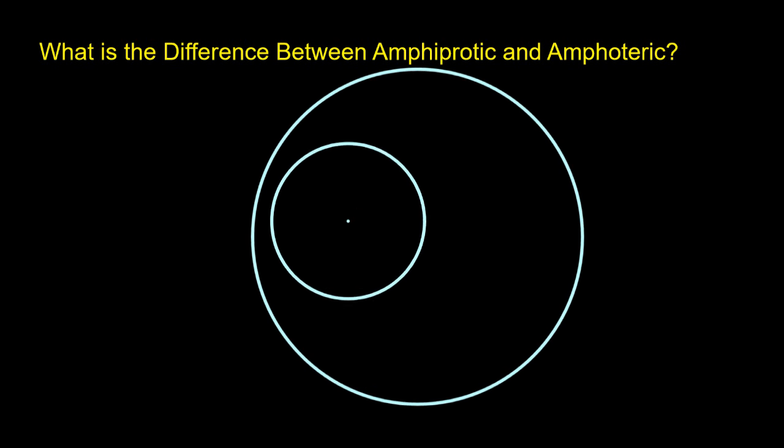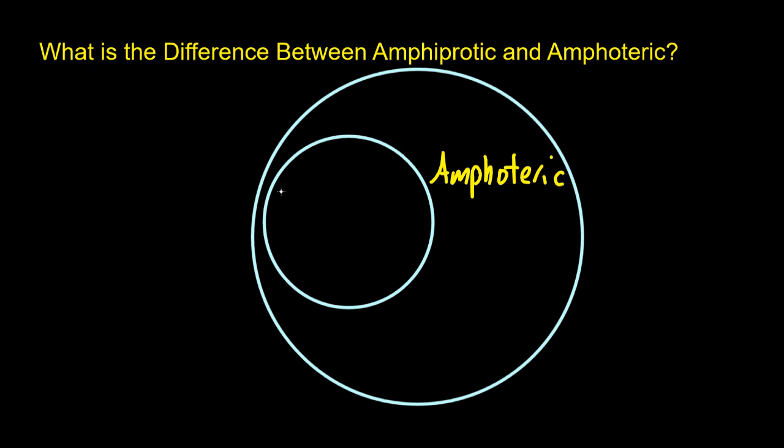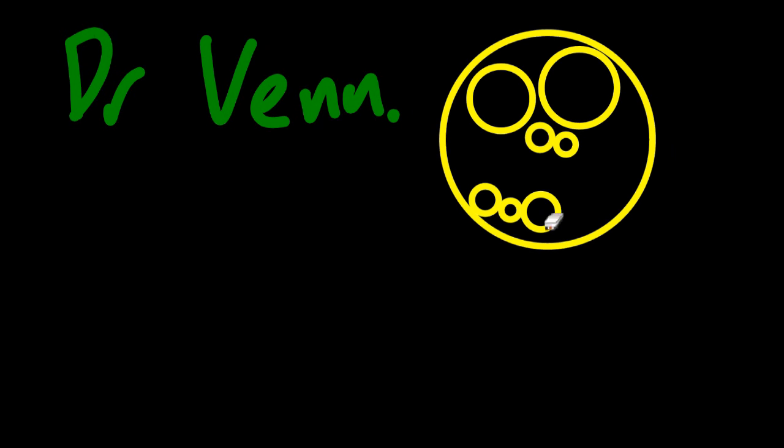On a Venn diagram, you can see that anything amphiprotic also has to be amphoteric. Amphiprotic is exclusively to do with Bronsted-Lowry acids and bases. Amphoteric is to do with any sort of acid and base.